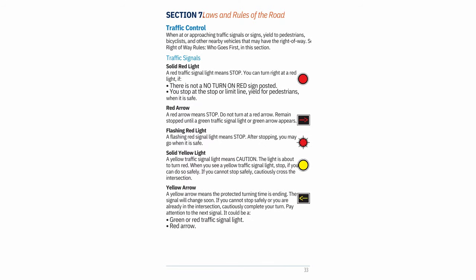Section 7 — Laws and Rules of the Road: When at or approaching traffic signals or signs, yield to pedestrians, bicyclists, and other nearby vehicles that may have the right-of-way. Traffic Signals: Solid Red Light — a red traffic signal light means stop. You can turn right at a red light if there is not a no-turn-on-red sign posted, you stop at the stop or limit line, yield for pedestrians, and turn when it is safe.